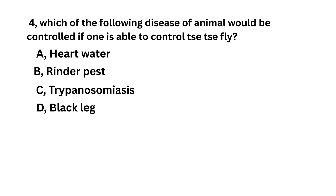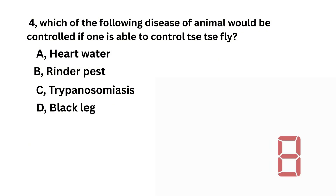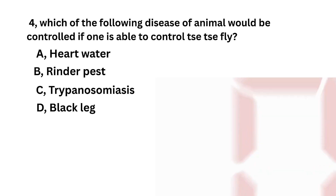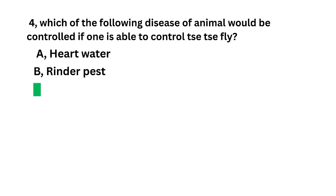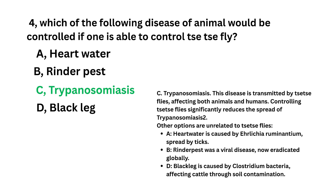Which of the following diseases of animals would be controlled if one is able to control the tsetse fly? Heartwater, rinderpest, trypanosomiasis, plague. Trypanosomiasis is the answer.